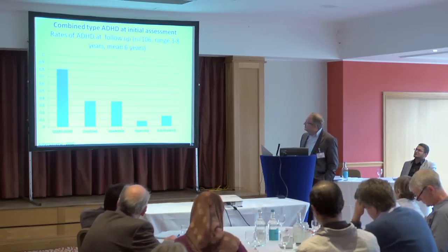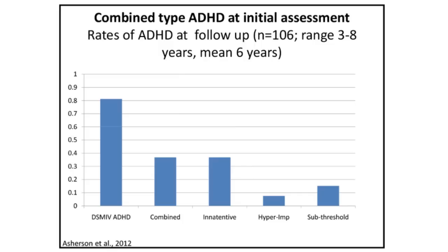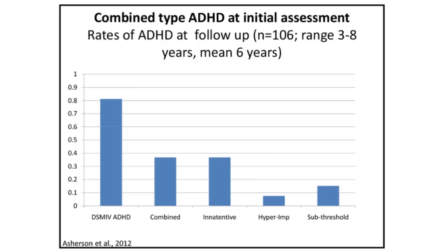We followed up our own sample of combined-type children in the UK, and found a much higher rate of persistence than other studies. When we followed them up on average six years later, we were still seeing 80% of them meeting full criteria for ADHD in young adulthood. There had been a shift in subtypes — they were all combined type initially, but about a third were combined type and another third inattentive type at follow-up, with a small number in hyperactive and sub-threshold groups.